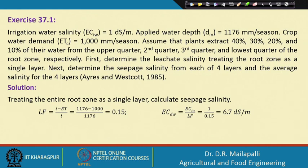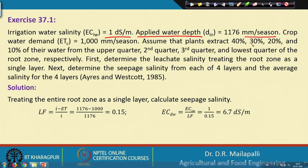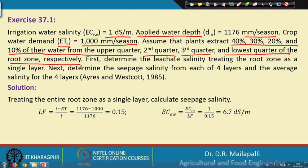Here is an exercise. Irrigation water salinity is given as 1 dS/m, applied water depth D is 1176 mm per season, and crop water demand ETC is 1000 mm per season. Assume that the plants extract 40%, 30%, 20%, and 10% of their water from the upper quarter, second quarter, third quarter, and lowest quarter of the root zone respectively.